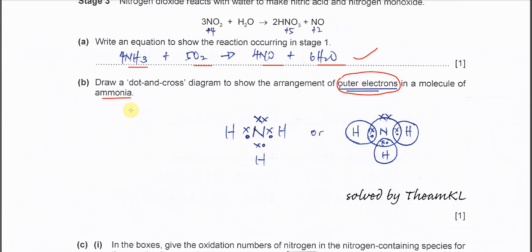First you need to make sure the total electrons involved in NH3 - nitrogen will contribute five electrons, hydrogen will contribute three electrons.